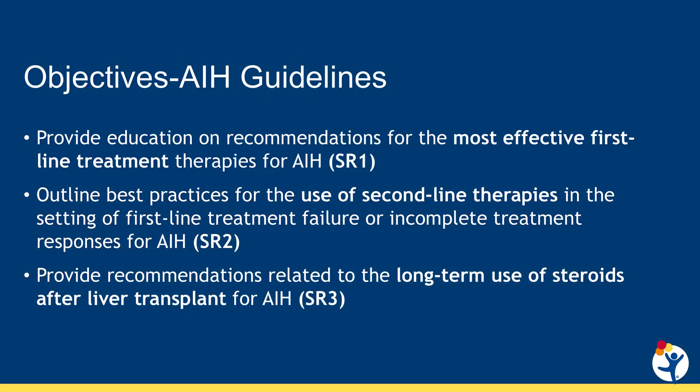The objectives of this talk will be: one, to provide education on recommendations for the most effective first-line treatment therapies for autoimmune hepatitis; two, to outline best practices for the use of second-line therapies in the setting of first-line treatment failure or incomplete treatment response; and three, to provide recommendations related to the long-term use of steroids after liver transplant for autoimmune hepatitis.